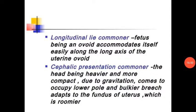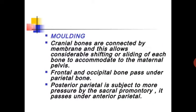Longitudinal lie is commoner because the fetus accommodates itself easily along the long axis of the uterine ovoid. Cephalic presentation is commoner because the head is heavier and more compact due to gravitation, and commonly occupies the lower pole, while the bulky breech adopts the fundus.